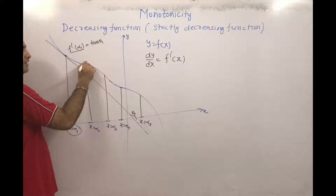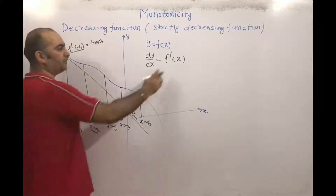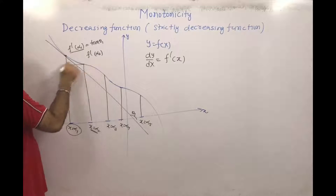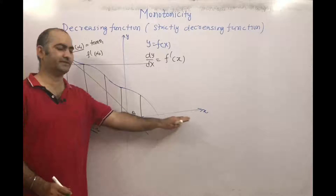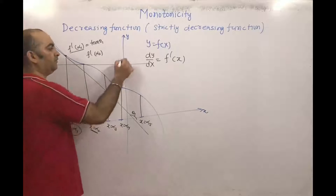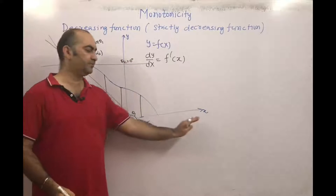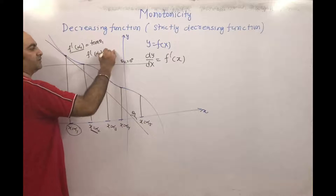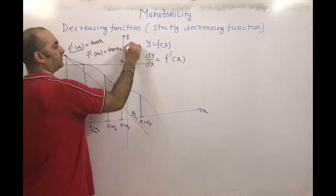Similarly, at the point x = alpha2, the slope of the tangent is f'(alpha2). If we draw the tangent there, it is parallel to the x-axis, making an angle theta2 = 0 degrees with the positive x-axis. Therefore, f'(alpha2) = tan(theta2) = tan(0) = 0.